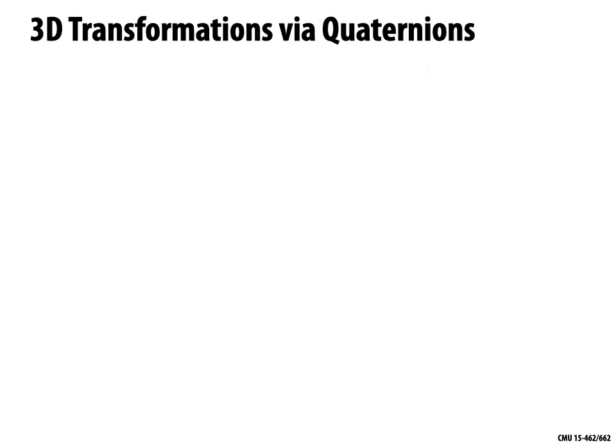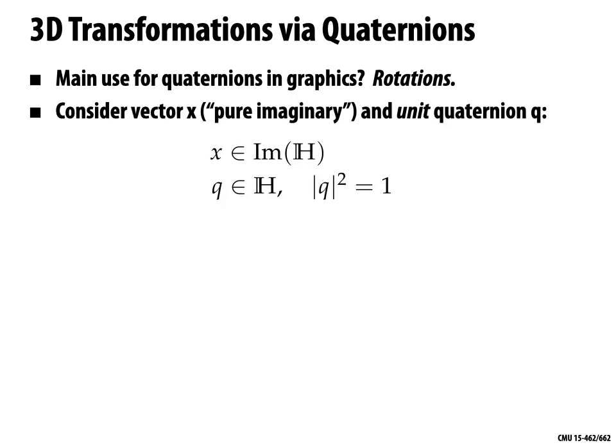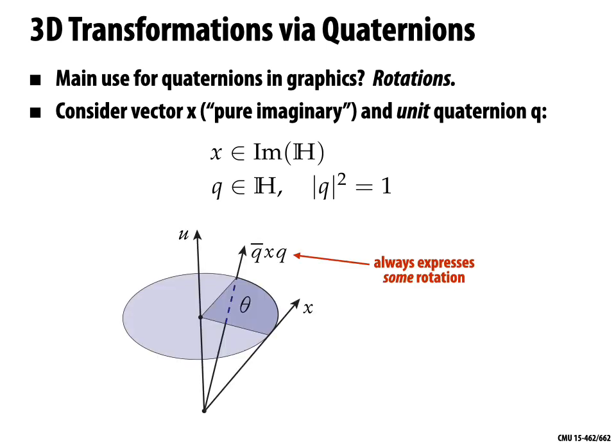How do we use quaternions to express three-dimensional transformations? Consider a vector X from R³ — a vector with just three imaginary components — and a unit quaternion Q, meaning one where the four components A, B, C, D have norm one. Then we can express a rotation as Q̄XQ. The bar means the same thing as for complex numbers: for Q = A + Bi + Cj + Dk, Q̄ means we keep the real component and negate the three imaginary components.